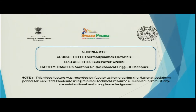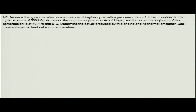Let us begin the first problem of today's tutorial. The first problem is an aircraft engine which operates on a simple ideal Brayton cycle with a pressure ratio of 10. Heat is added to the cycle at a rate of 500 kilowatt, so Q_in is 500 kilowatt, and air passes through the engine at a rate of 1 kg per second, so m_dot air is 1 kg per second.